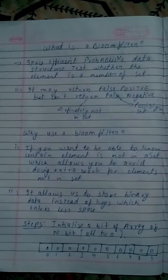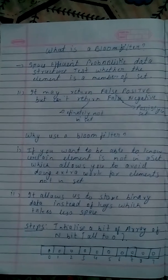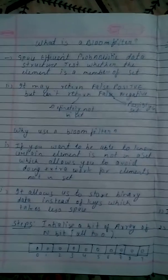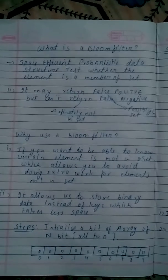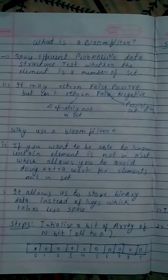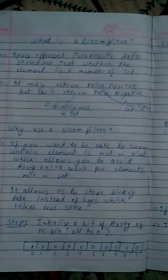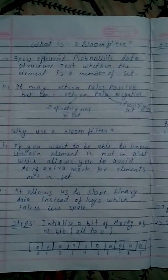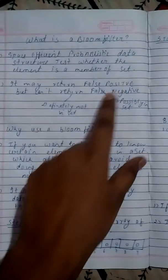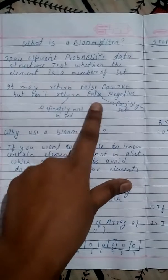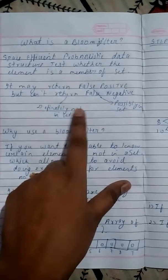So let's start. Bloom filter is nothing but a space-efficient probabilistic data structure for which we are able to find whether the particular element is in our set or not. We are using an array. If the element is returning false positive, it is possibly in the set. And if it returns false negative, it is definitely not in the set.